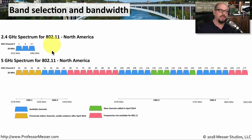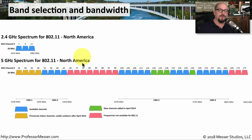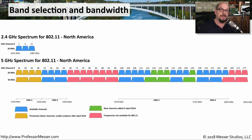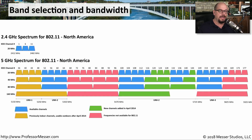For 5 gigahertz, there are many more blocks of 20 megahertz channel bandwidths available. Anything not reserved is available bandwidth you can use in 5 gigahertz, showing a large difference in available bandwidth compared to 2.4 gigahertz. These 5 gigahertz standards also allow larger channel bandwidths — you can group them together for 40 megahertz, 80 megahertz, or in the case of 802.11ac, 160 megahertz channels.